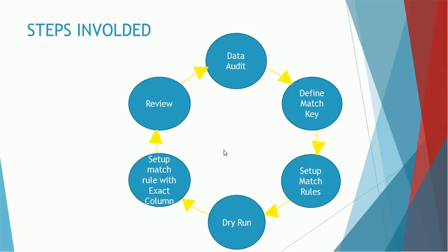Before configuring, we have to define those columns first. Once we have defined all the columns, the next step is configuring or setting up the match rules based on the match columns. Then we have to run the first dry run of the match rules — how it is going to execute, how many matches it generates, whether it's over-matching or under-matching. Once we do the first dry run, the next step is to tune the rules: which column needs to be an exact match, which needs to be a fuzzy match, which has null-matches-null, and so on.